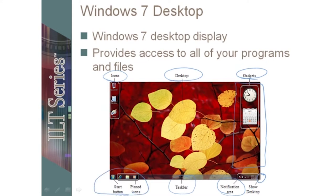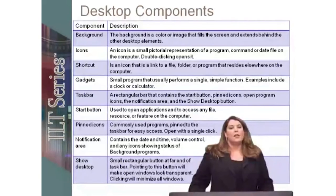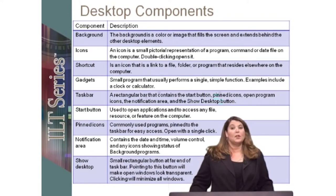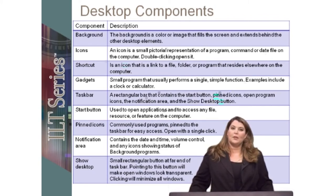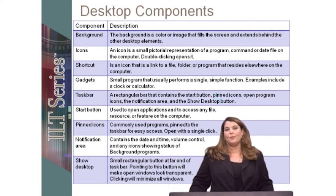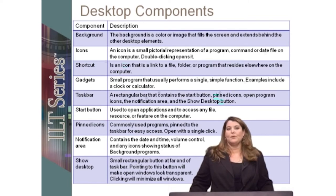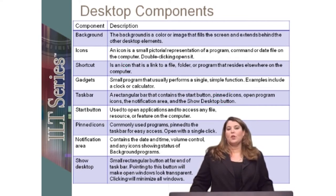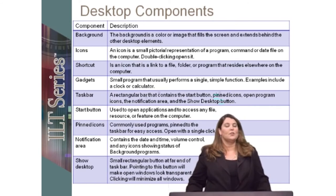To name some of these components: the background is the background colors and graphics you choose that display on the desktop. Icons are the pictures that represent the programs or documents you'll be going into. A shortcut refers to a shortcut to an original document or program — if we delete the shortcut, we don't actually delete the document or program. Gadgets are small, single-function programs that we can place on the desktop or remove. The taskbar has always been along the bottom of the screen, but now it has a different look — it's a little more transparent, and how it displays applications is a little different as well.